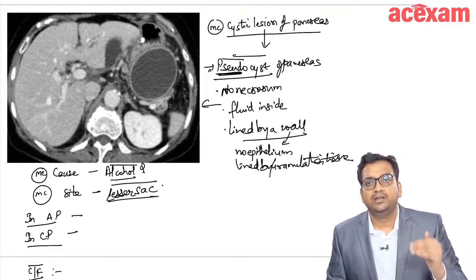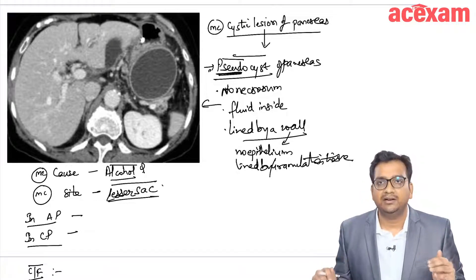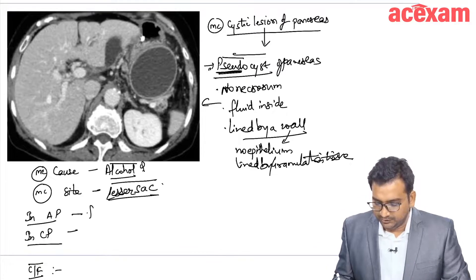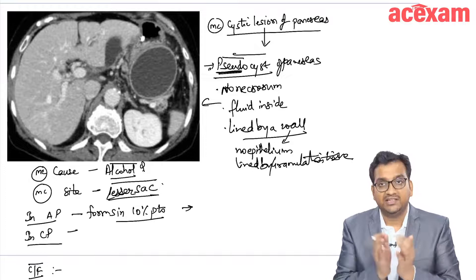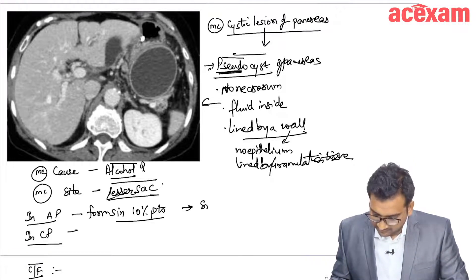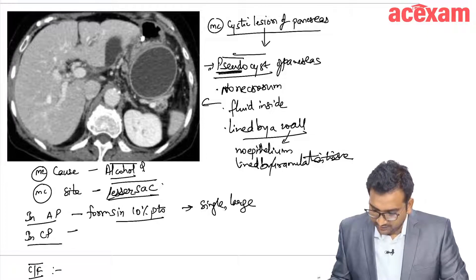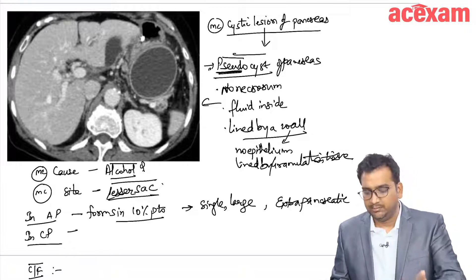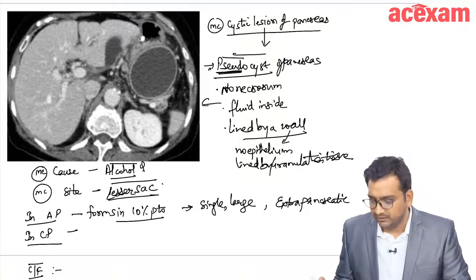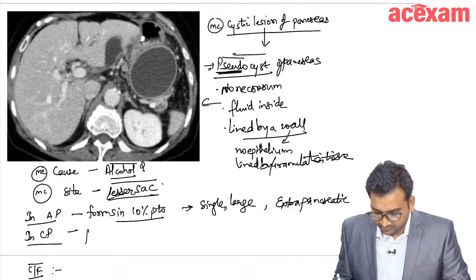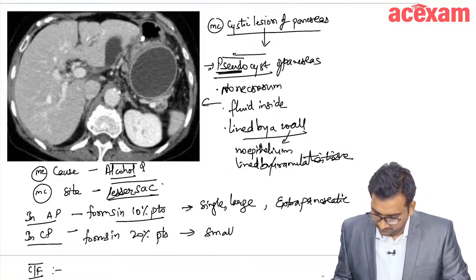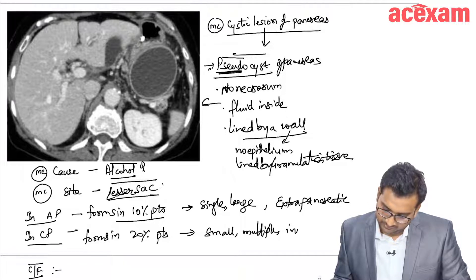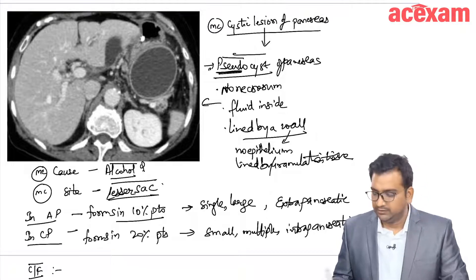There is a difference when the pseudocyst is forming in acute pancreatitis and in chronic pancreatitis. In acute pancreatitis, pseudocyst forms in 10% of patients and the cyst is single, large, and extrapancreatic. In chronic pancreatitis, pseudocyst forms in 20% of patients but the cysts are small, multiple, and intrapancreatic.